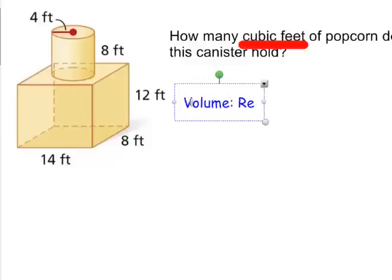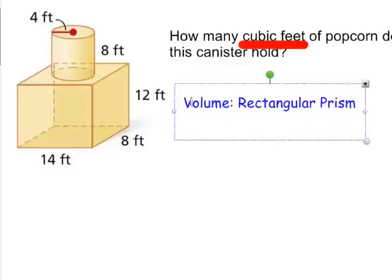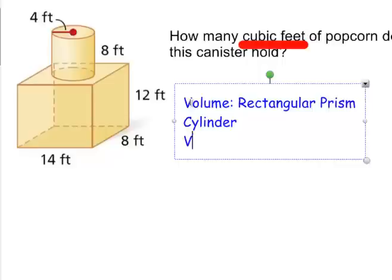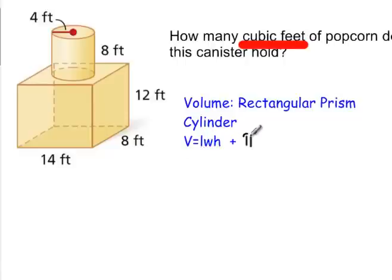I have two shapes: a rectangular prism and a cylinder. The formula for the volume of a rectangular prism is length times width times height. To that, we add the volume of a cylinder. Remember, volume is the area of the base — the base of a cylinder is a circle, so I need to use pi r squared times the height of the cylinder.